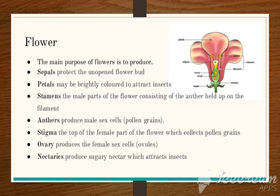Now, the different components of the flower are as follows. Number 1: sepals. What is their function? They protect the unopened flower. Number 2: petals. They are brightly colored to attract insects. As you can see, these are the petals.